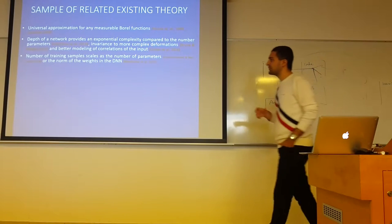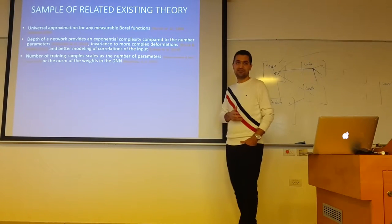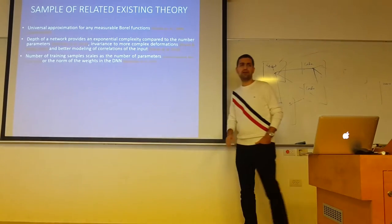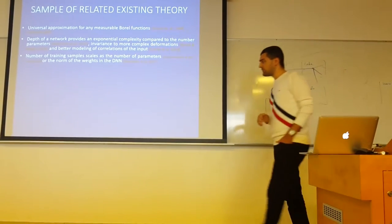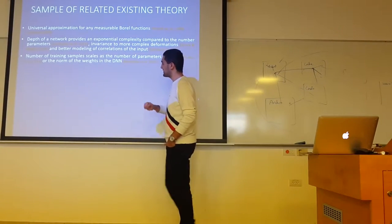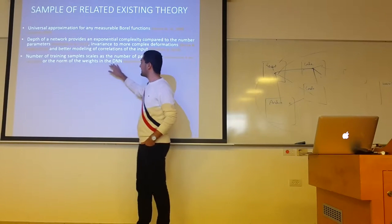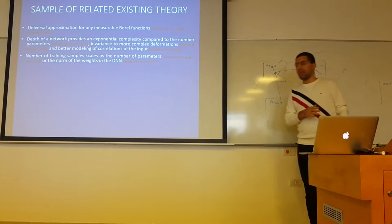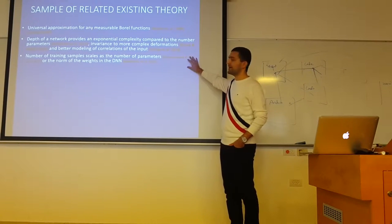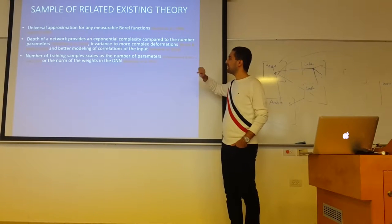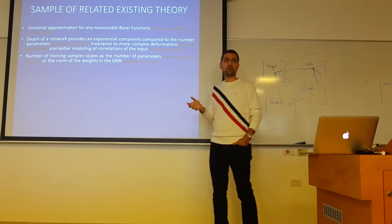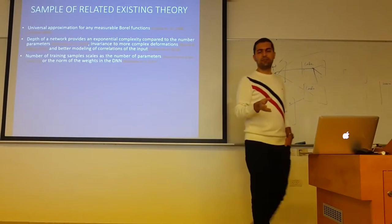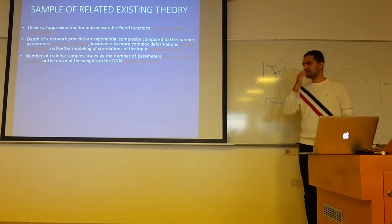Some works have studied the generalization error of networks. A result by Shalev-Schwartz and Ben-David showed that the number of training samples scales as the number of parameters in the network, using VC dimension arguments. Neyshabur et al. showed that the number of training samples scales as the norm of the weights in the deep neural network, but with an exponential dependency on depth. There is also a recent paper by Ben-Recht and colleagues, though I should have included it, which I didn't.